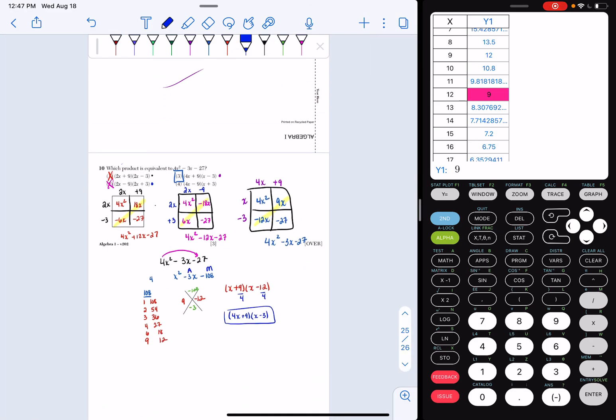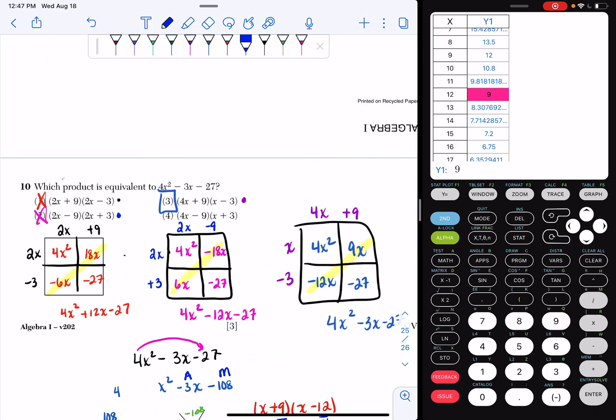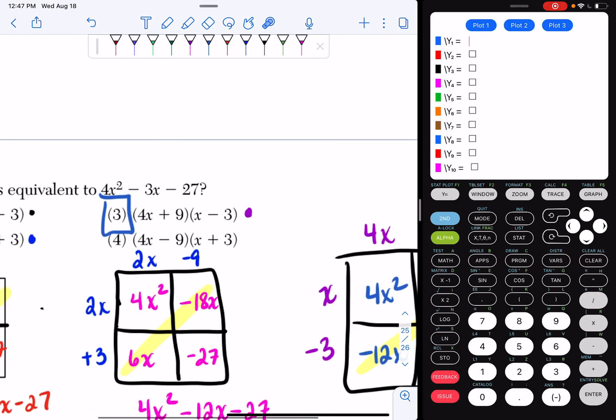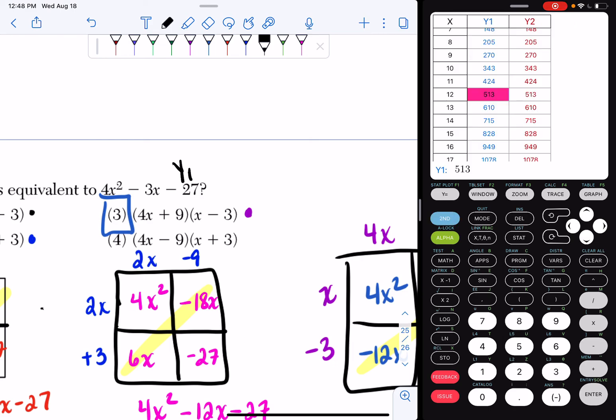I also could have just done this question on the calculator. It says, which product is equivalent to 4x squared minus 3x minus 27? So if you wanted to, you could have put this equation into y1. So I type in 4x squared minus 3x minus 27. Since I know my answer is choice 3, I'm just going to put in choice 3. I have 4x plus 9 times x minus 3. I'm going to hit second graph. And if I look, my tables of values are the same. So it has to be choice 3.